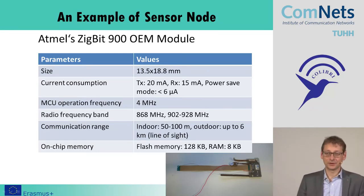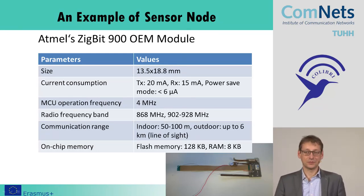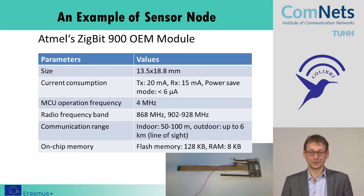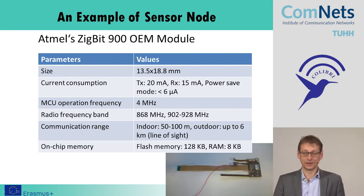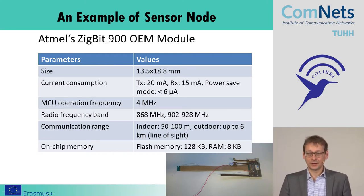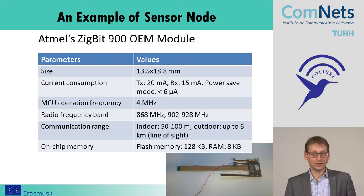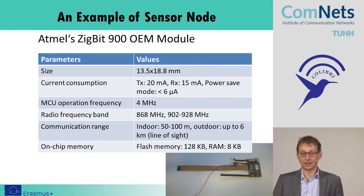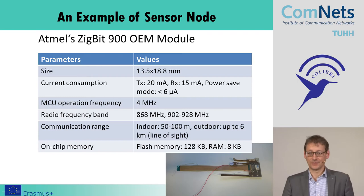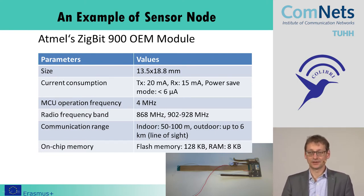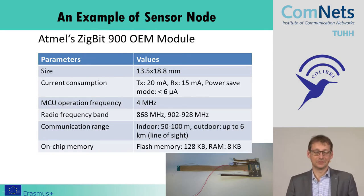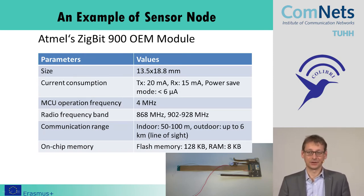An example of a sensor node is, for example, this Atmel zigbit module, which is using 900 MHz frequencies. You remember frequencies in the lower band are better for propagation. It can communicate 50 to 100 meters outdoor, maybe up to 6 kilometers if you have the appropriate antennas and line of sight. And we have something like on-chip 128 kilobytes of flash memory and 8 kilobytes of RAM. The size is something like 13 by 18 millimeters.